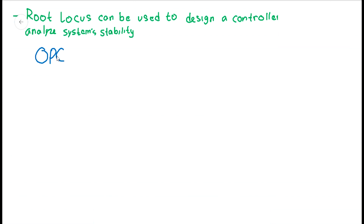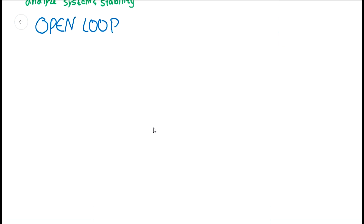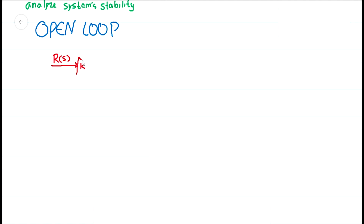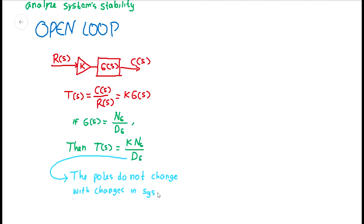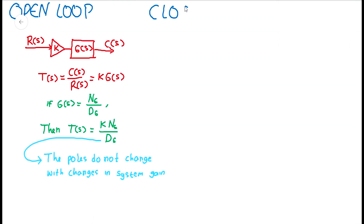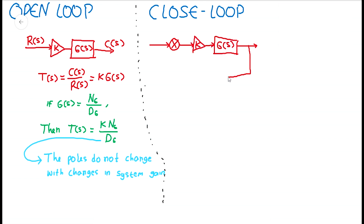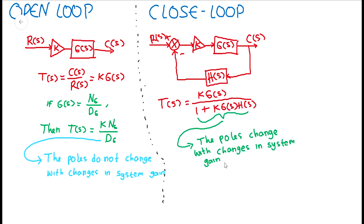Let us start by doing an example. As we can see from the illustration of the open-loop block diagram, the poles of the open-loop transfer function can be easily determined, since the poles do not change with changes in system gain. However, if we look at closed-loop systems, the poles are much more difficult to determine — they cannot be found without factoring the closed-loop system's characteristic polynomial. Since the system's transient response and stability are dependent upon the poles of T, we do not know the system's performance unless we factor out the denominator for specific values of K.